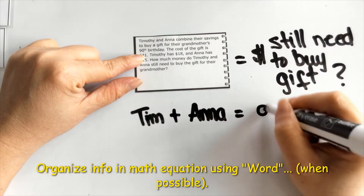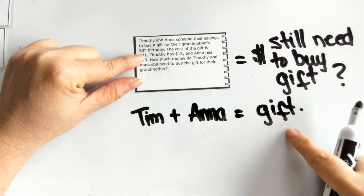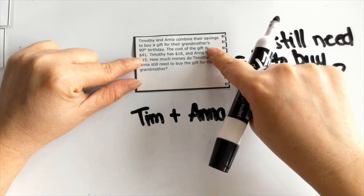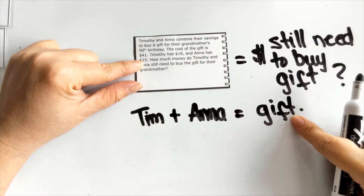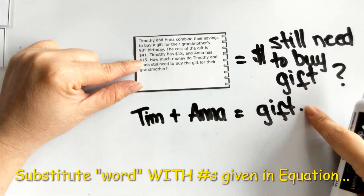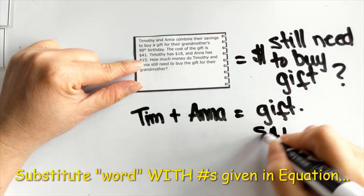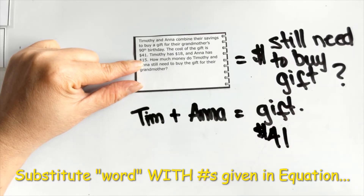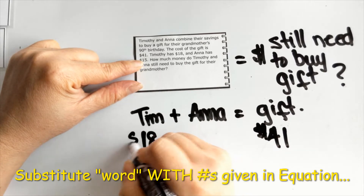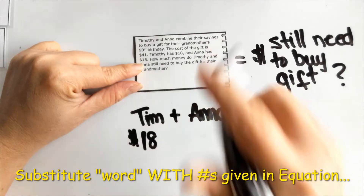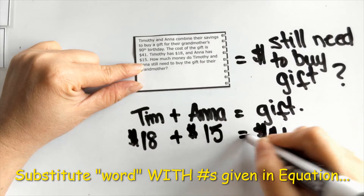I make 'gift' in the setup match 'gift' in the problem for consistency. The second sentence says the cost of the gift is $41, so where the gift is, I substitute numbers in place of the words — the gift is $41. Then it says Timothy has $18, so right underneath Timothy I put $18, and Anna has $15, so right underneath Anna's name I put $15.